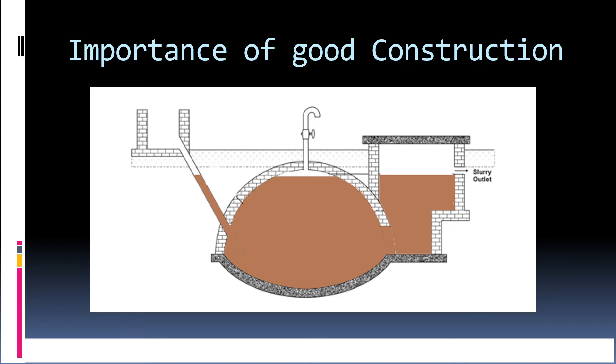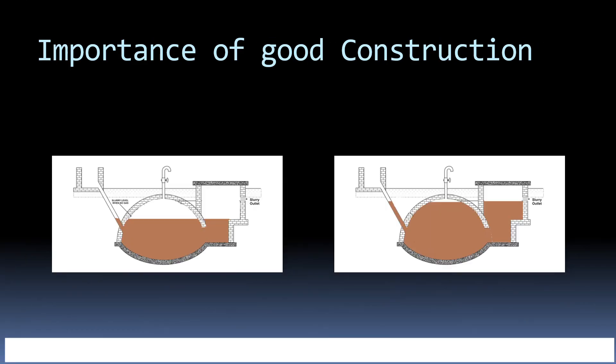If you accidentally put more slurry into the biogas plant, then its level inside the digester will rise. If plant construction is not good and proper gap is not left between gas pipeline and the level of slurry, then the slurry may block gas pipeline which can be dangerous.